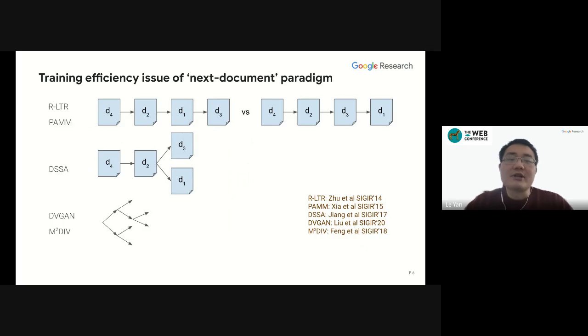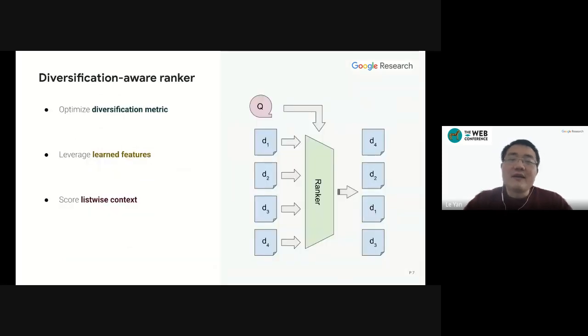Our question is: how can we bypass this next document paradigm so that we can efficiently train a model? Can we solve the diversification problem with a score and sort ranker? And our answer to the question is, of course, yes. To achieve such a diversification-aware ranker with state-of-the-art performance, we have incorporated the following techniques.